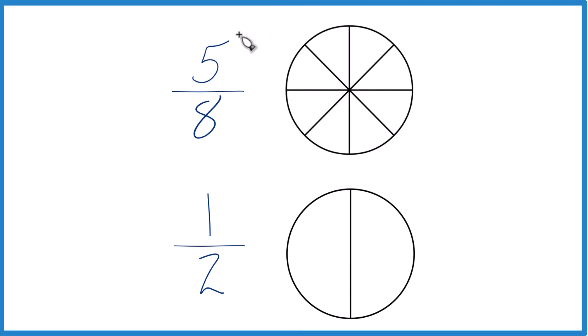So here's how you figure out which fraction is bigger, 5 eighths or 1 half. You could just divide 5 by 8 on a calculator, divide 1 by 2, and then you get the decimals and compare those. And you'll find that 5 eighths, that's bigger than 1 half.